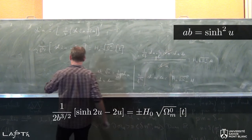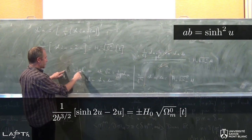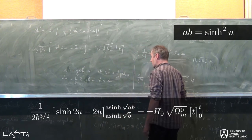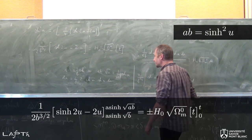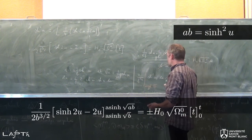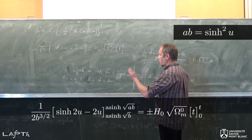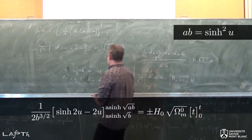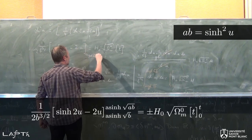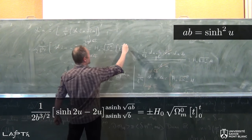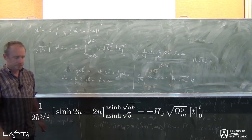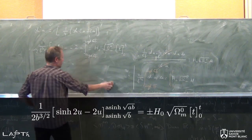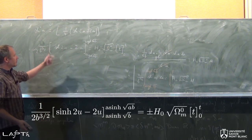À t = 0, le facteur d'échelle a vaut 1. Pour a = 1, sinh²(u) vaut b, donc u vaut arg sinh(√b). Pour une valeur quelconque de a, la valeur de u correspondante est arg sinh(√(ab)). Ce sont les bornes que je choisis : en bas arg sinh(√b), en haut arg sinh(√(ab)). On voit le bout du tunnel parce qu'on a sinh de quelque chose dans la primitive, alors que la borne, c'est l'arc sinh — donc sinh et arg sinh vont se simplifier.